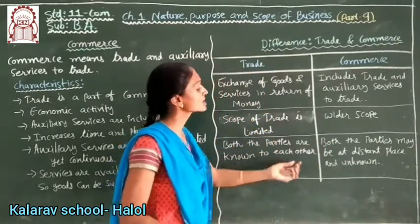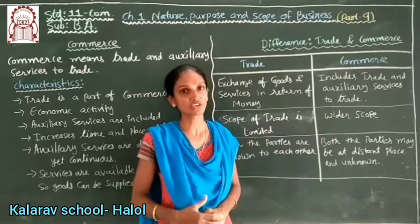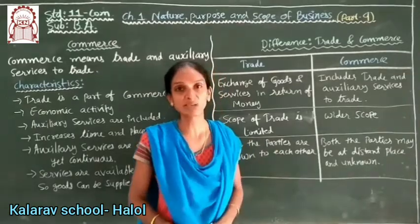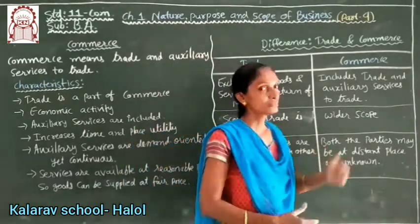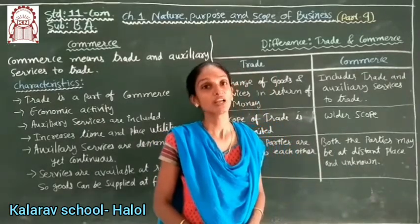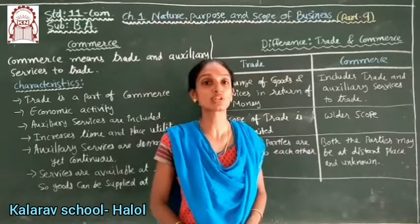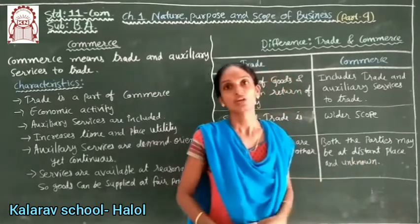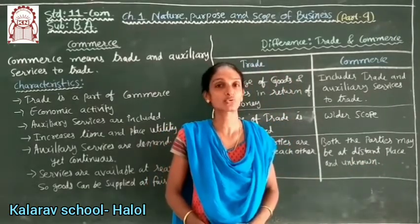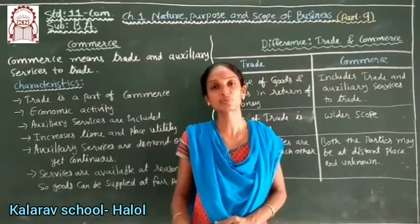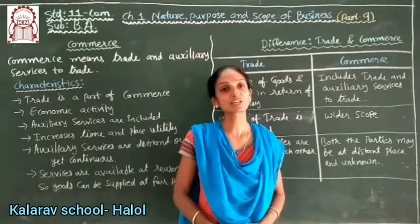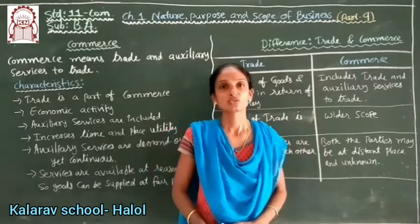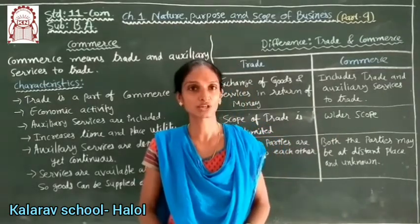In trade, both parties — the seller and the purchaser — are known to each other. But in commerce, particularly in international trade, the parties may be at a great distance, in different countries, and unknown to each other. They can still do business from far distances. So that is the wider scope of commerce. Those are the key differences. We will continue in the next session. Thank you.